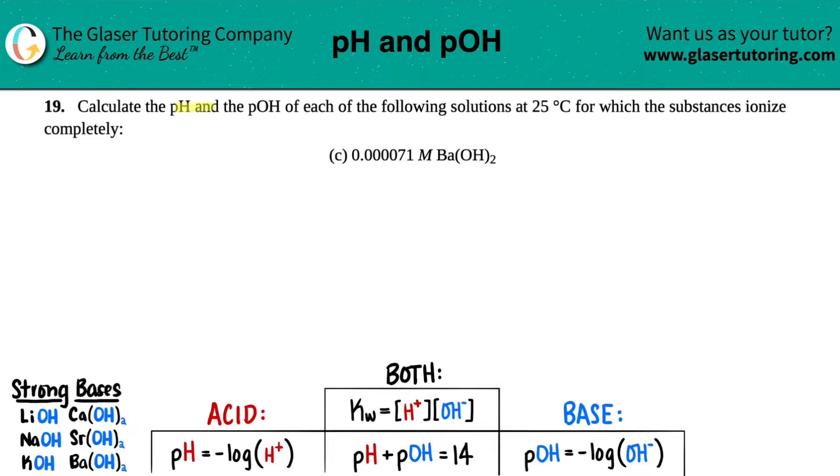Number 19, calculate the pH and the pOH of each of the following solutions at 25 degrees Celsius for which the substances ionize completely. And then we have letter C. So in this case, we have 0.000071 molarity of barium hydroxide, which is Ba(OH)₂.